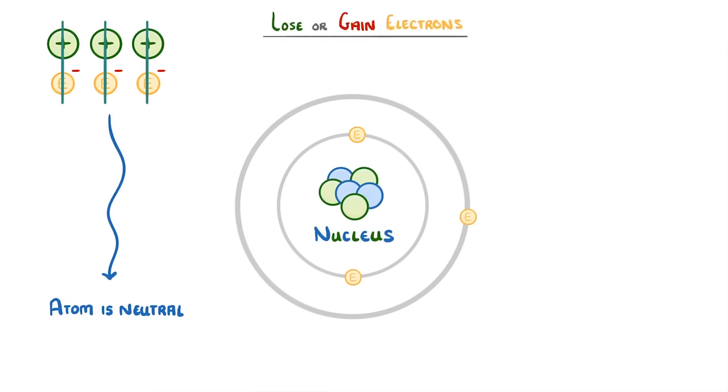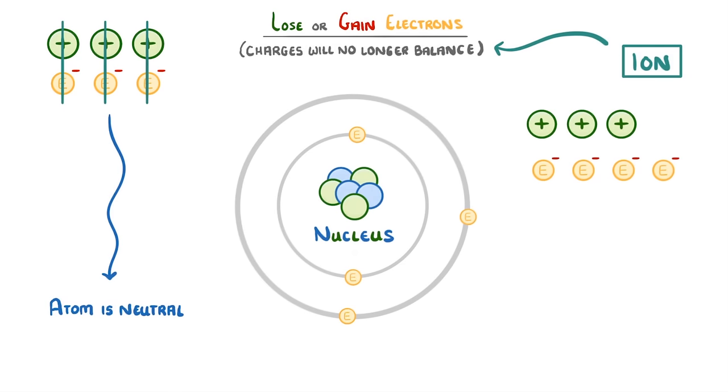Atoms can lose or gain electrons though, in which case the charges would no longer balance, and the overall atom would become charged. When this happens, we stop calling it an atom, and instead call it an ion. For example, if we gave our atom an extra electron, we'd still have three protons, but four electrons. And so the charges would no longer balance. And it would now be a negative ion. We'd call this a one minus negative ion, because it only has one extra electron.